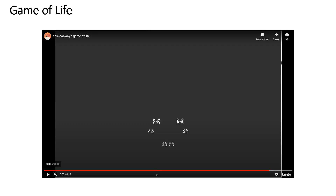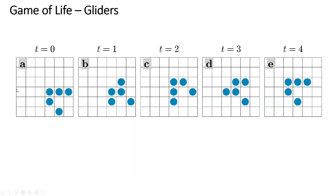An important implementation point: when you update the grid, you don't implement changes as you go — you save them for the next step. You have to update all cells at once for the next generation. For example, if I decide that this cell is going to become alive in the next step, and I make it alive before checking its neighbor, then when I check that neighbor it will count an extra alive cell — this creates a problem. You have to change all of them simultaneously.